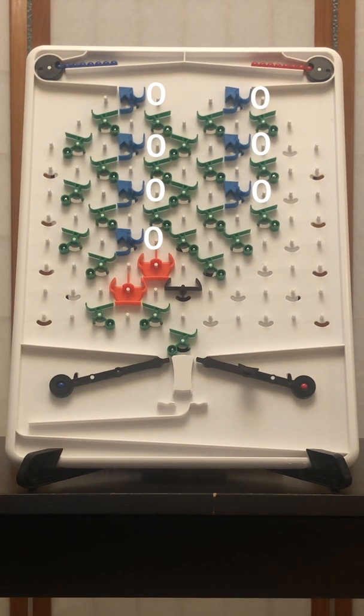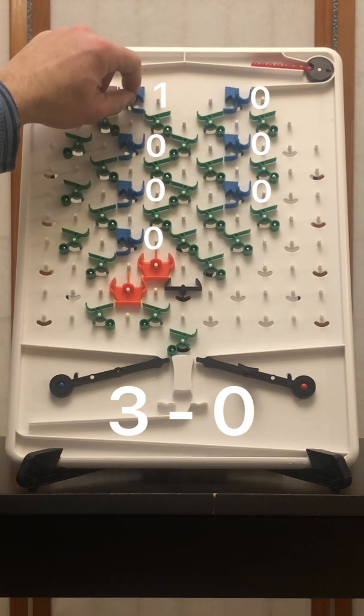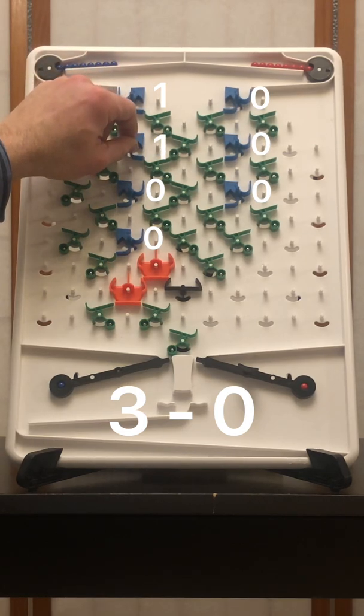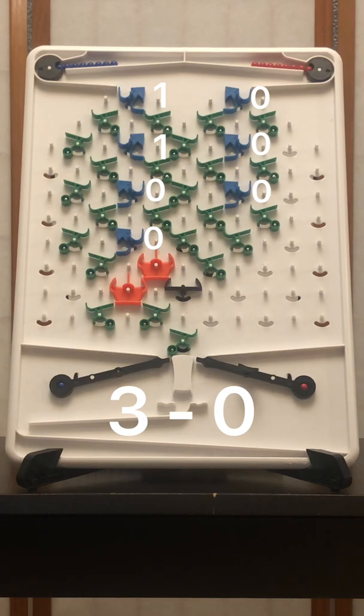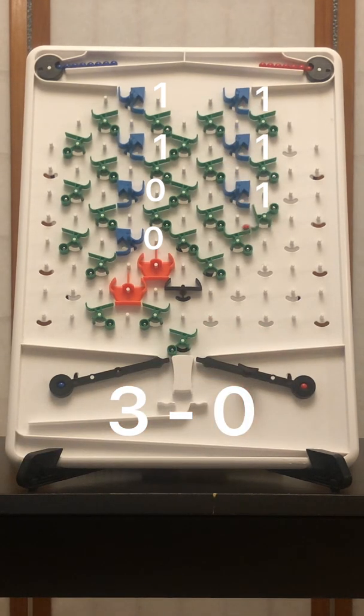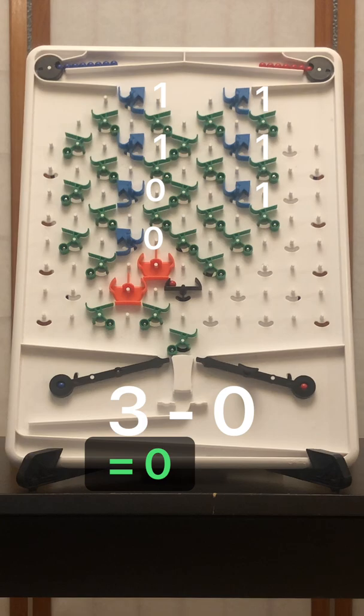In our second example, we're going to do 3 minus 0. So I'm going to set bit 1 and bit 2, which represents the 2, as we have 1 plus 2, which is 3. On the right-hand side, we have all three bits set to 0. So this is going to calculate 3 minus 0. And there we have it.